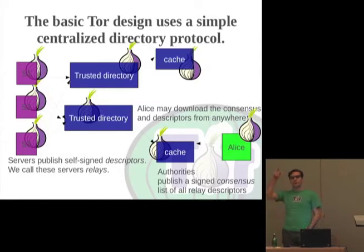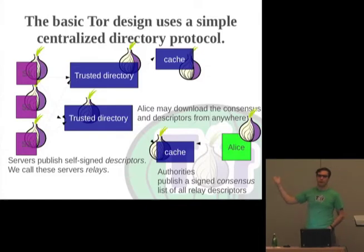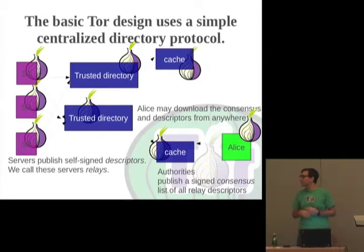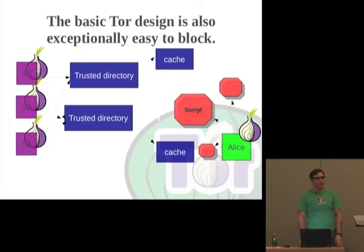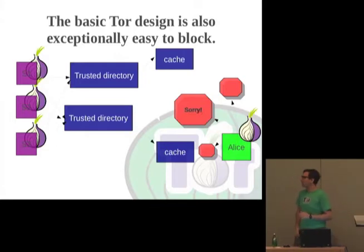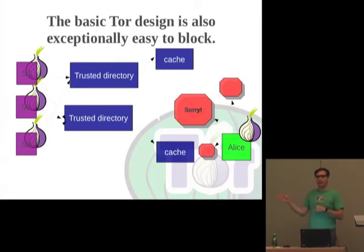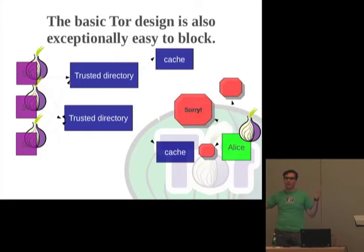The directory design — for the one person that doesn't know what Tor is — all the relays publish to directories. The directory authorities are trusted authorities; there are eight of them in the world right now, some in the US, some in other countries. On the 60th anniversary of a particular leader coming to power in China, they decided they were done with having Tor in their country. They downloaded the list of all the Tor relays and just put them in the firewall and blocked it.